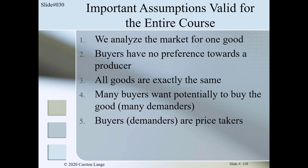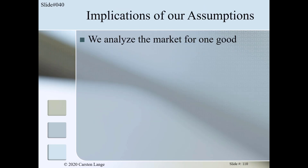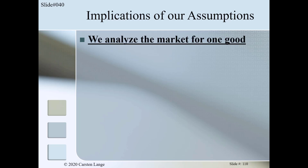Here's a warning: be careful with this experiment because the supermarket might think you're insane and they might call the police. Since we will apply these assumptions to our entire course, let's take a look at their implications. We analyze the market for one good — but as we mentioned, the term 'one good' is not unambitious.